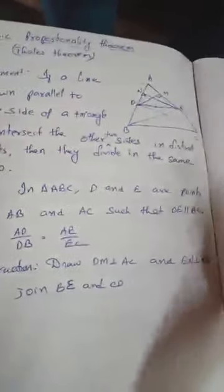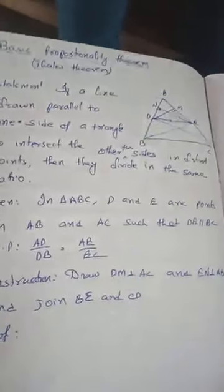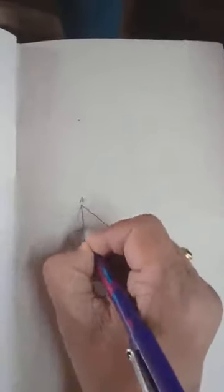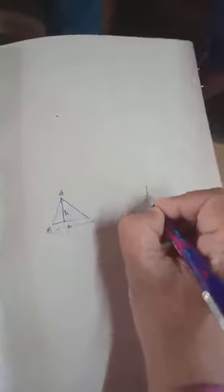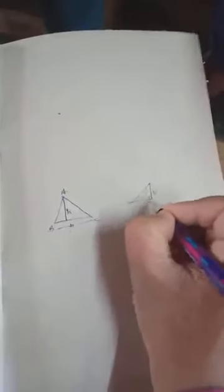Before proving, recall what the area of a triangle is. Area of triangle equals half times base times altitude. For example, in triangle ABC, if the base is BC and the corresponding altitude is H, then area equals half times BC times H.